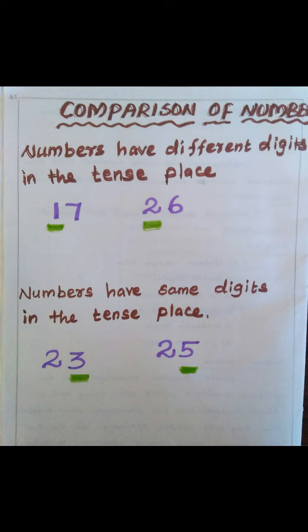17 has 7 ones. Next, 26 has 2 groups of tens and 6 ones. So, 26 is greater than 17. We will know this by the bundles.